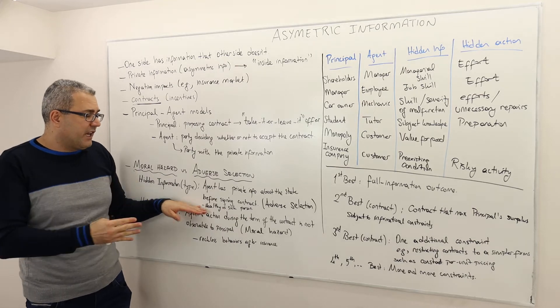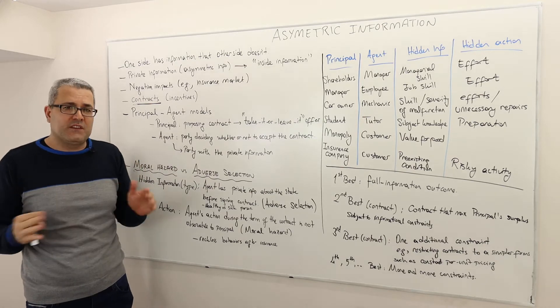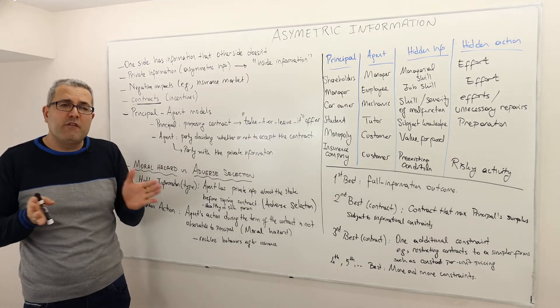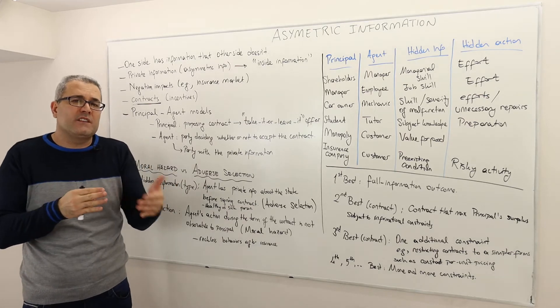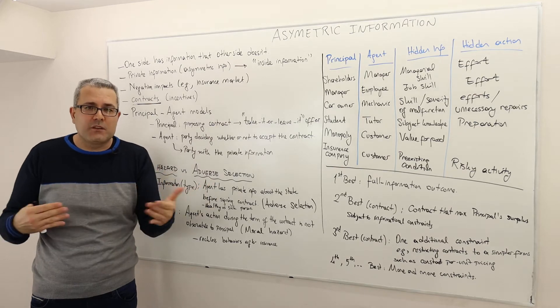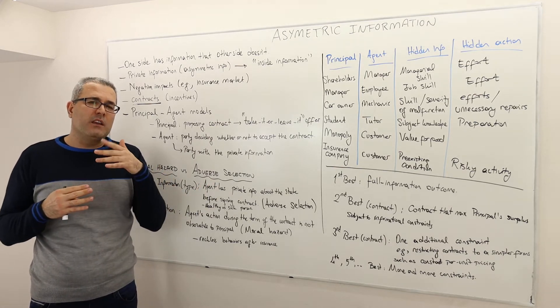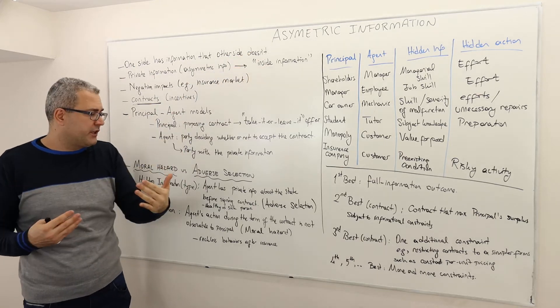You can think of an example like a person, the agent, can be healthy or sick, like maybe no pre-existing condition or maybe some pre-existing condition. So this is the private information, and the insurance company doesn't know whether this agent has this private information or what type of customer he's dealing with. So the same language of incomplete information games.